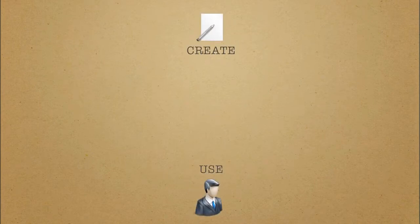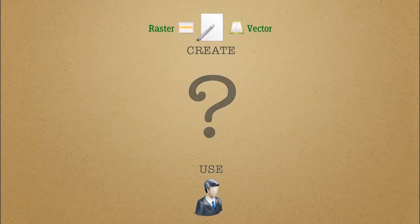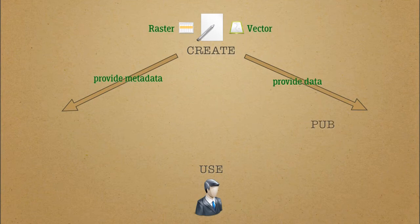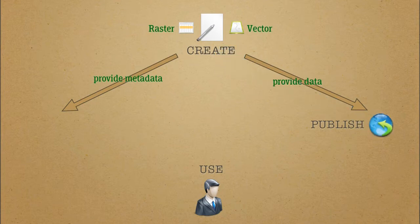We've come to the most complex part of the presentation. In order to connect data providers with data users, special data infrastructures, or SDIs, use web services for vector and raster data. First, data providers create and publish metadata — a standardized description of the data and the data itself. The important web services encountered here are named WMS, WCS, or WFS.